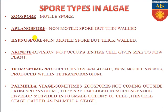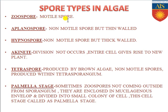In the next slide we will discuss the spore types present in algae — those spores responsible for the asexual mode of reproduction. First, there is a type of spore known as zoospore. These are motile spores because they contain flagella, and due to the presence of flagella they are known as motile spores.